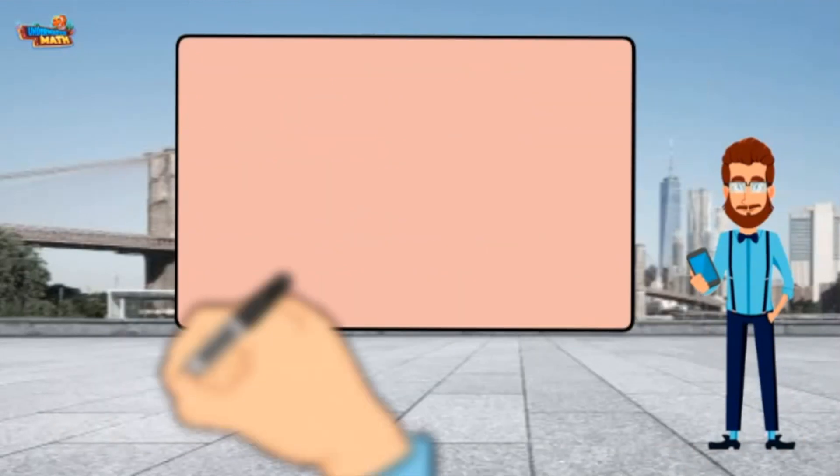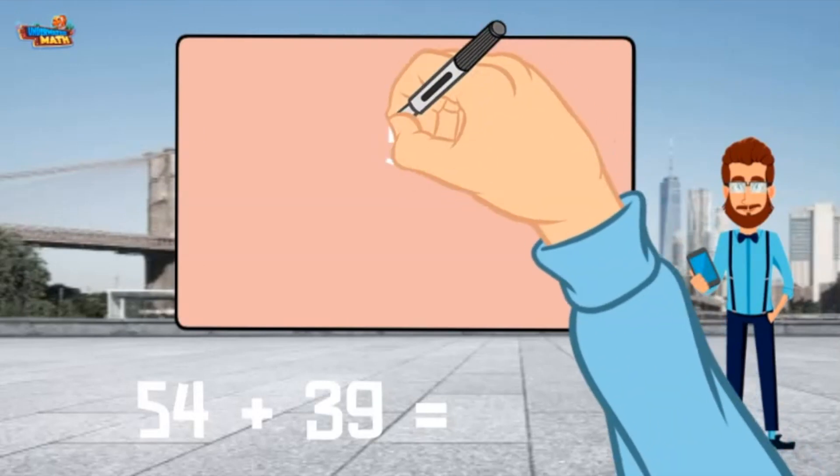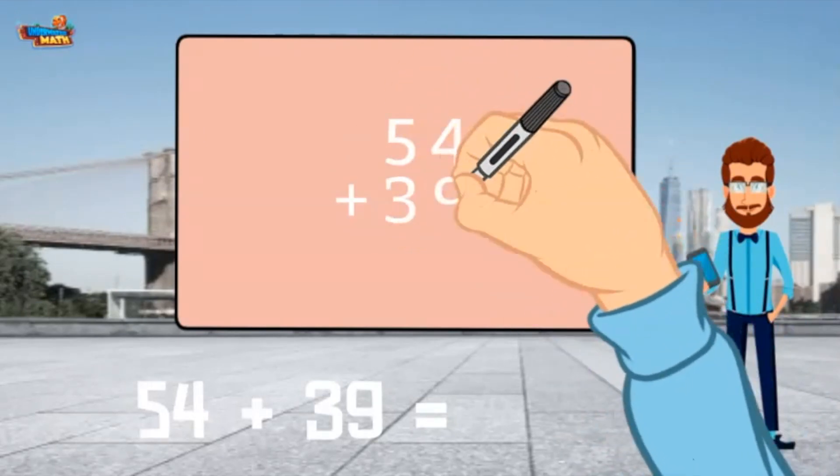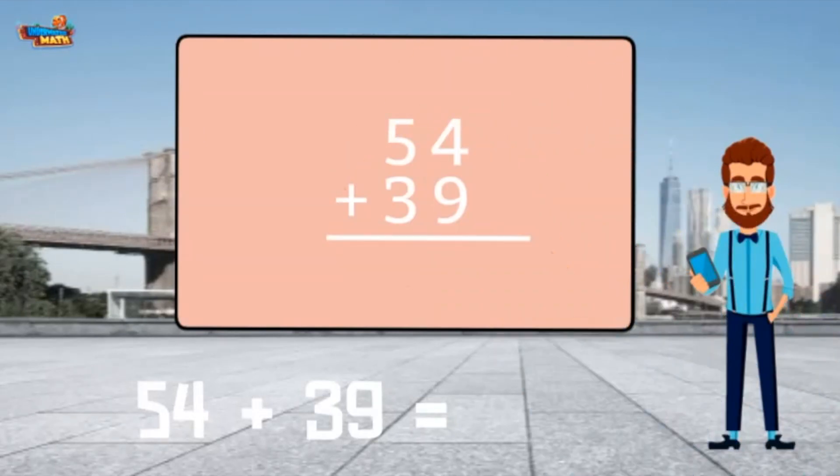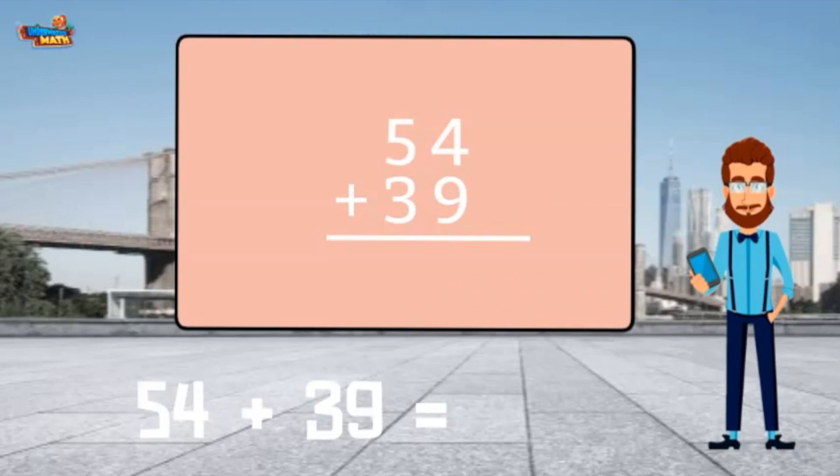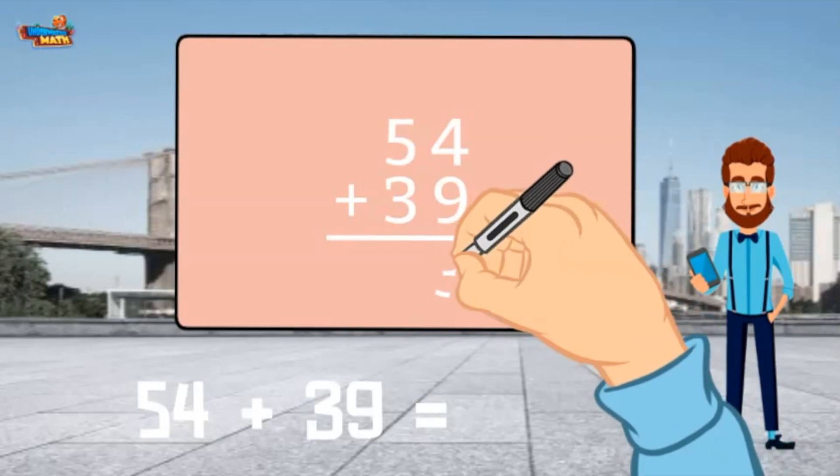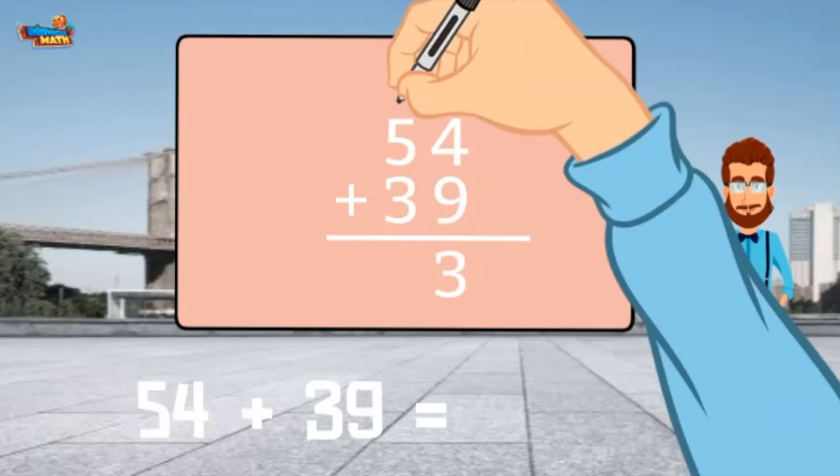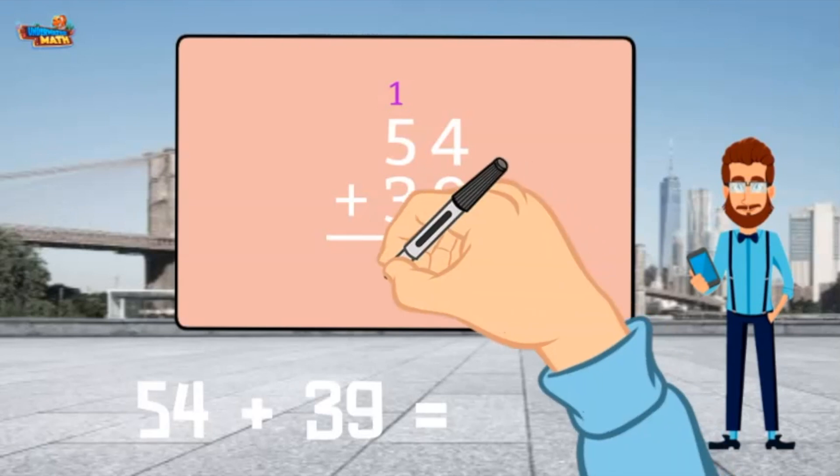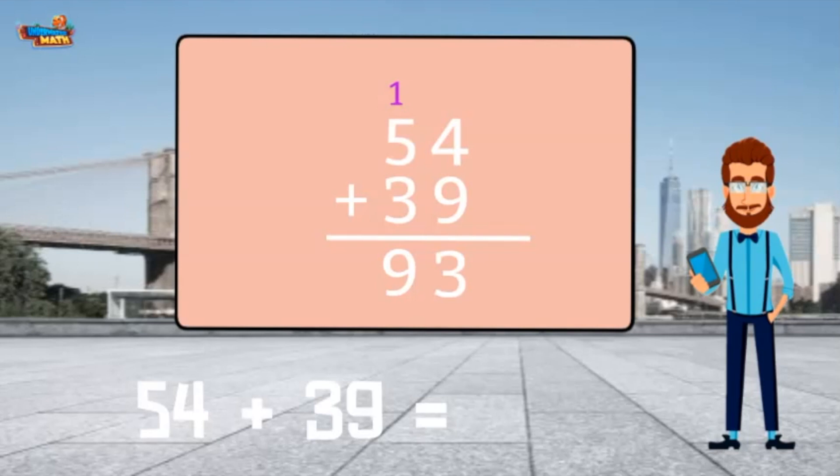Let's use those steps to add 54 plus 39. Stack the numbers on top of one another. Make sure the place values line up. Starting with the ones place, we add 4 plus 9. It equals 13. The 3 goes in the ones place and the 1 is carried over to the tens place. Add 5 plus 3 to get 8 and then add 1, which equals 9. 54 plus 39 equals 93.